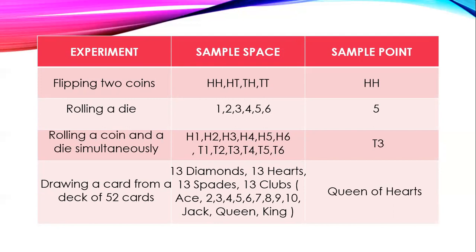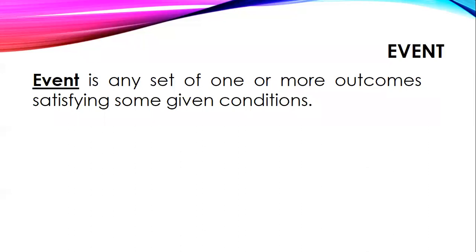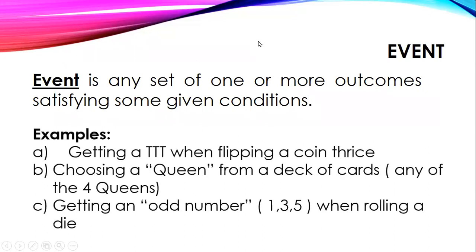Event is any set of one or more outcomes satisfying some given condition. So event is like an experiment, but event is a set of one or more outcomes satisfying some given condition. It means there's a condition that is needed in the result. This is an event, for example: getting three tails when flipping a coin thrice, choosing a queen from a deck of cards, any of the four queens, getting an odd number 1, 3, 5 when rolling a die.